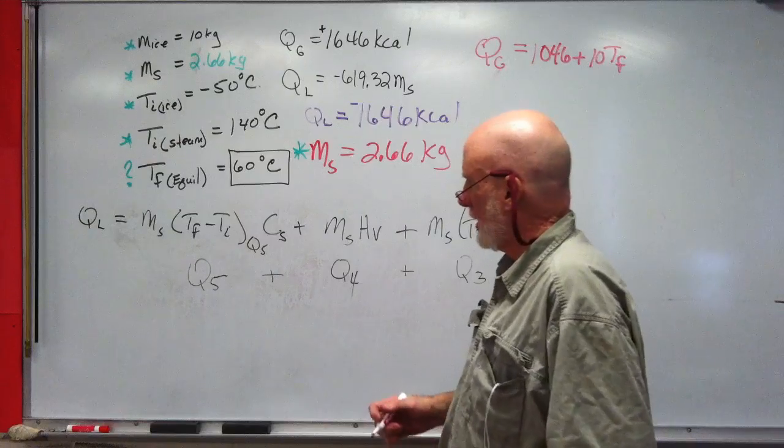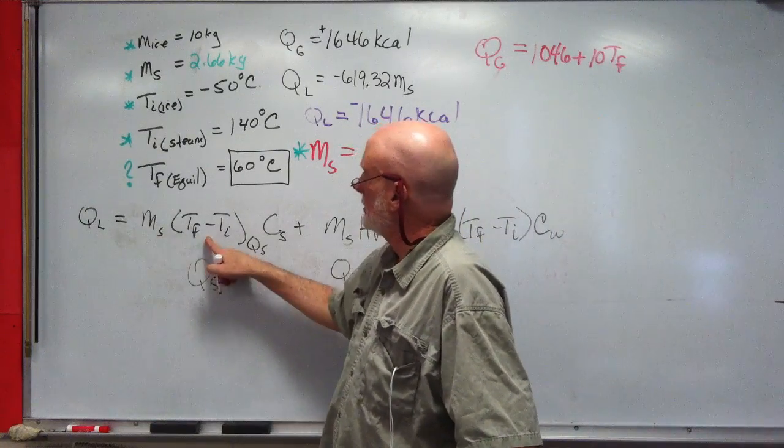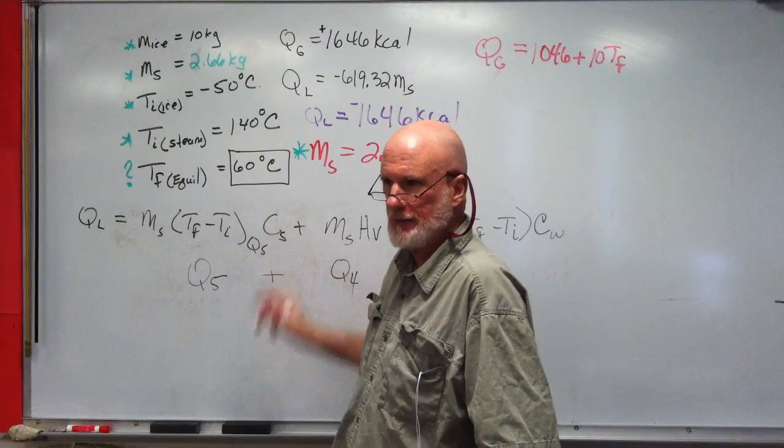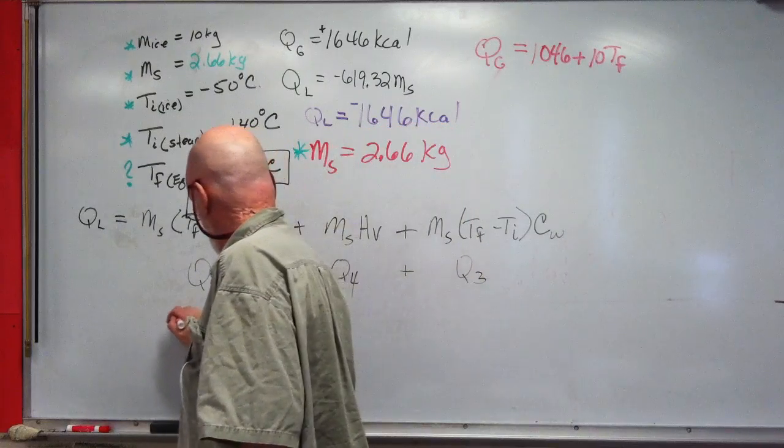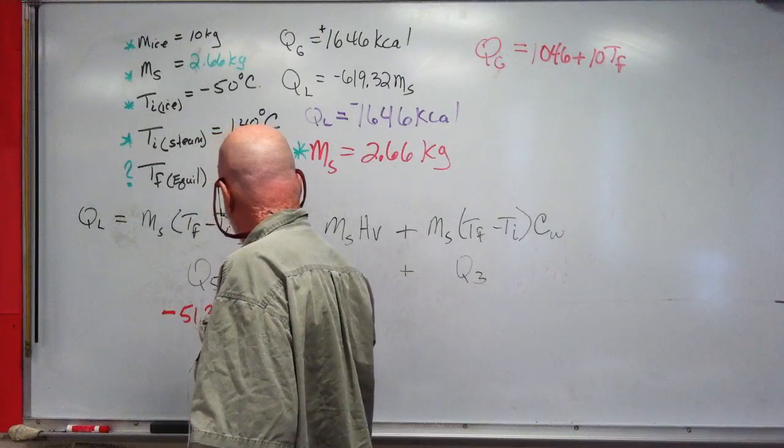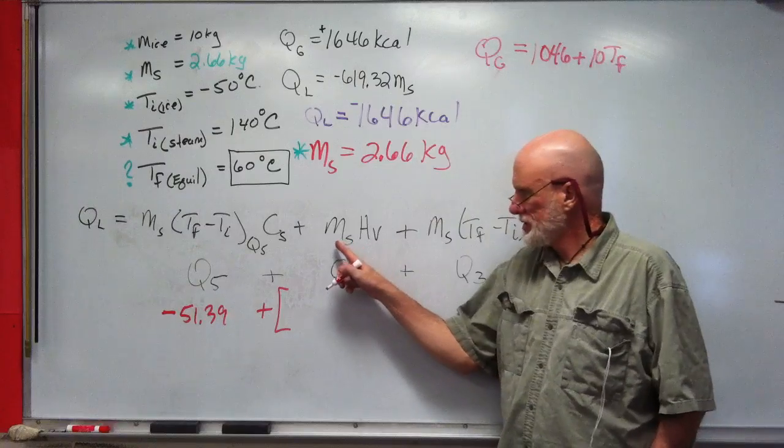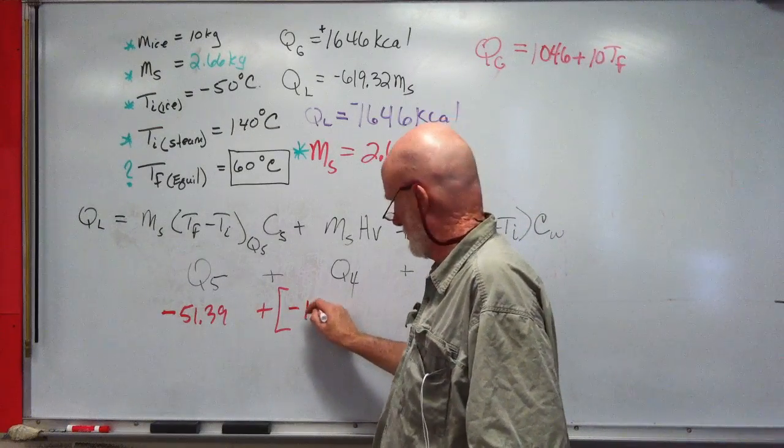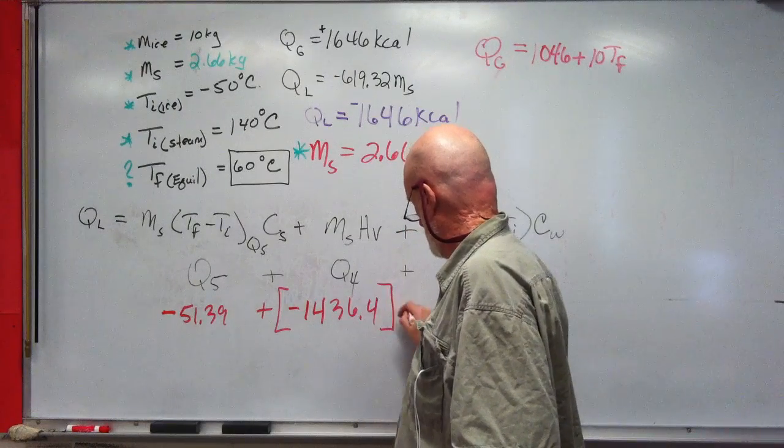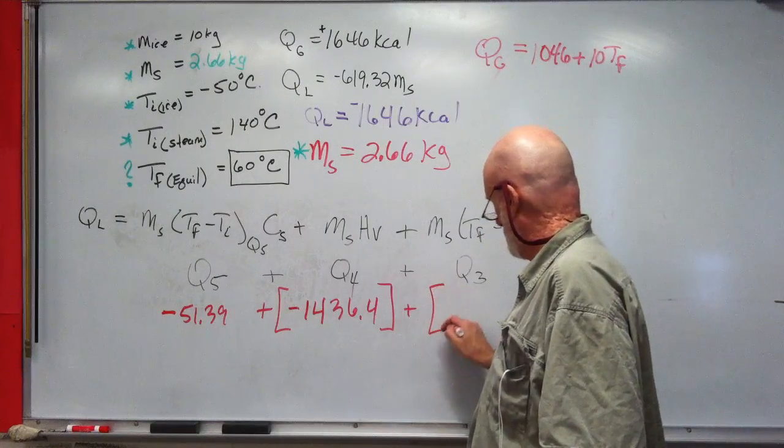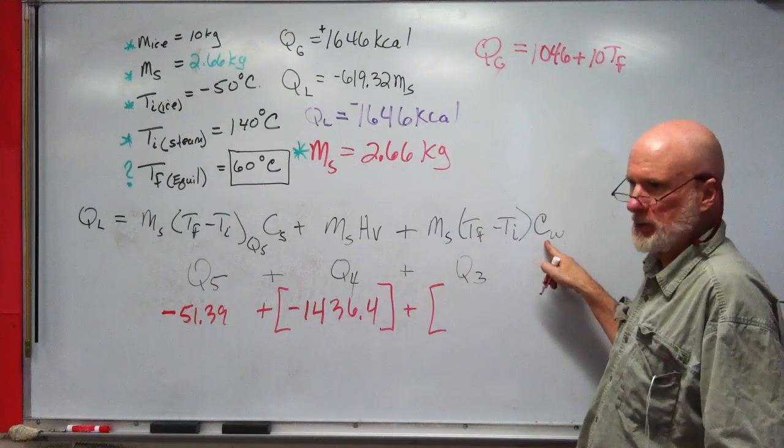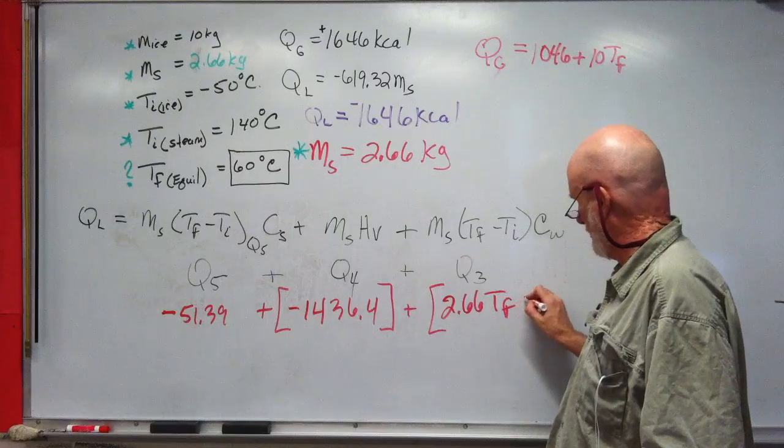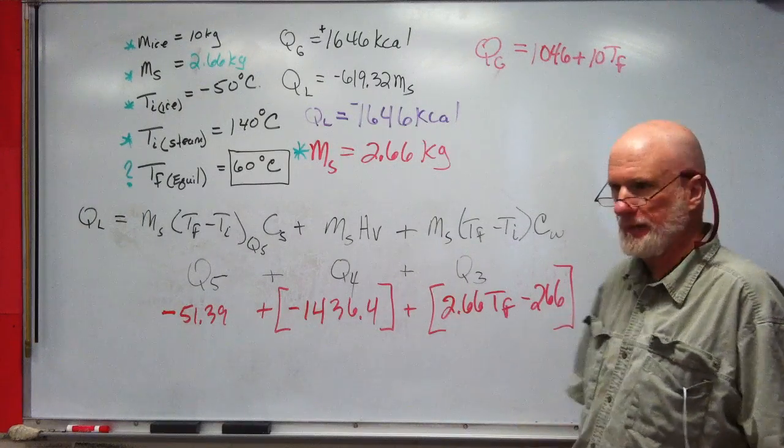We'll do this in red. So 2.66 times 40 times 0.483 is what? Negative 51.39, right. This will be 2.66 times 540. The next one will be 2.66 times 1 is just 2.66 times TF, which is 2.66 TF, minus 266.